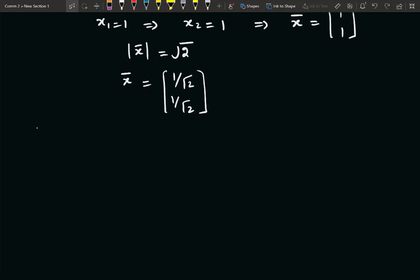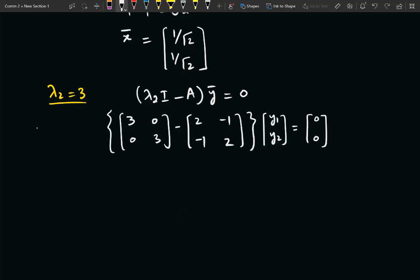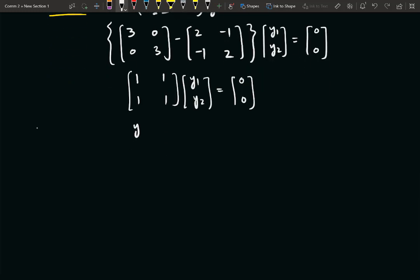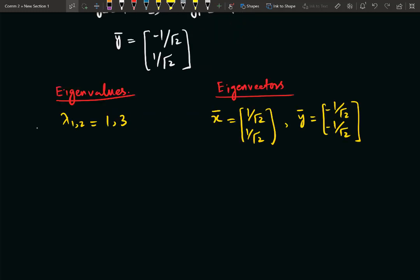A similar process can be repeated to have the second eigenvector. In our case, the second eigenvalue was equal to 3, so we have to solve the same equation for λ₂: (λ₂I - A) multiplied by vector y, which is the second eigenvector, is equal to 0. So that is the complete process to compute eigenvalues and eigenvectors.